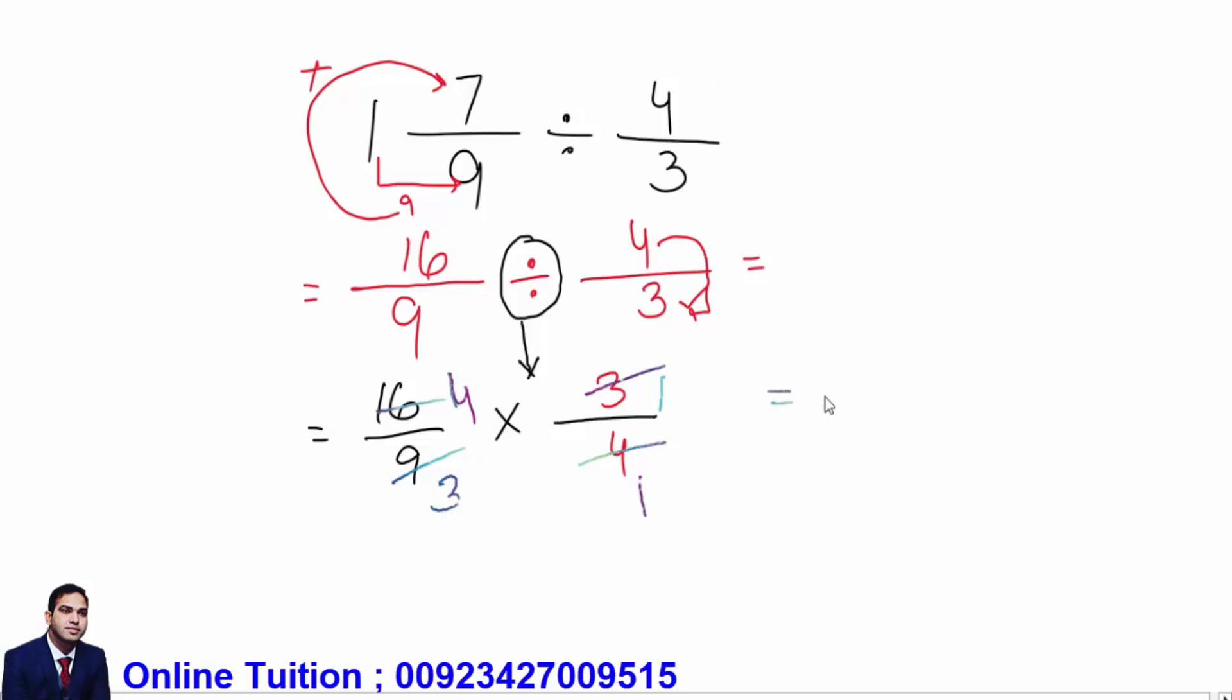Now after that we have four divided by three multiply one divided by one. Four will be multiplied with this one: four ones are four. Three ones are three. So look, this numerator is greater than the denominator - four is greater than three - then you can change it into a mixed fraction.